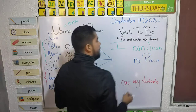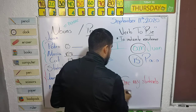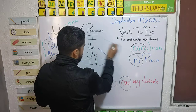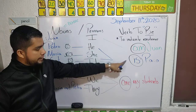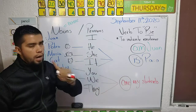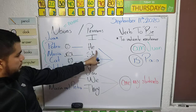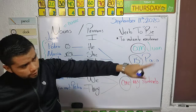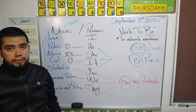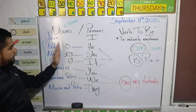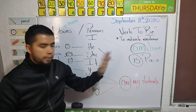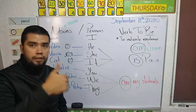So the verb 'to be' in present is divided into three different forms: 'am', 'is', and 'are'. I am Juan. He is Paco — because he's a boy. Or: they are my students. Remember, this is only for present. Every noun has a pronoun, and every pronoun has a different form of the verb 'be' in present. That's it — thank you!